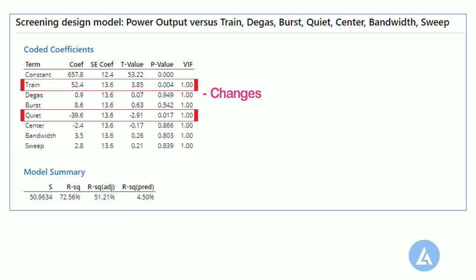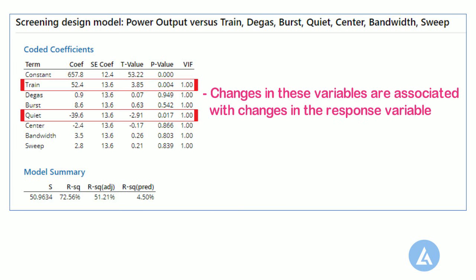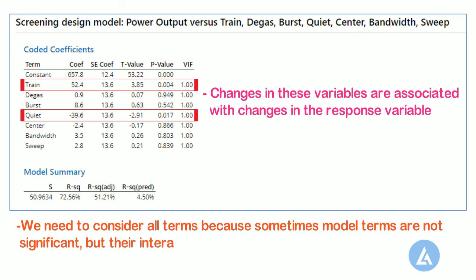We can conclude that changes in these variables are associated with changes in the response variable. We need to consider all terms because sometimes model terms are not significant, but their interactions with other model terms can be significant.